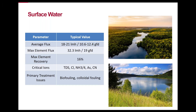Surface water comes from lakes, rivers, reservoirs, and estuaries. Typically it has lower TDS and higher total organic carbon and suspended solids when compared to well water. Its fouling potential is higher, so careful attention has to be paid to pre-treatment in surface water applications. Biofouling and colloidal — that is suspended solids — fouling are the primary treatment issues, although scaling and iron fouling are still possible.